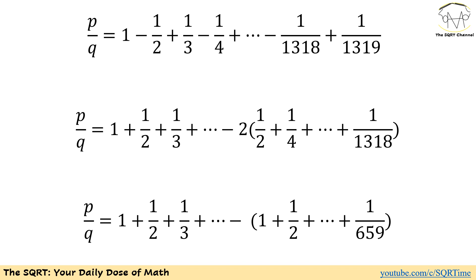So line 2 is what we are going to start with. Now we want to simplify what we have in line 2. We have 2 times an expression where the denominators are all even numbers. We are going to simplify 2 times all the even denominators: the first term becomes 1 over 1, the second becomes 1 over 2, and so on, and the last one becomes 1 over 659.